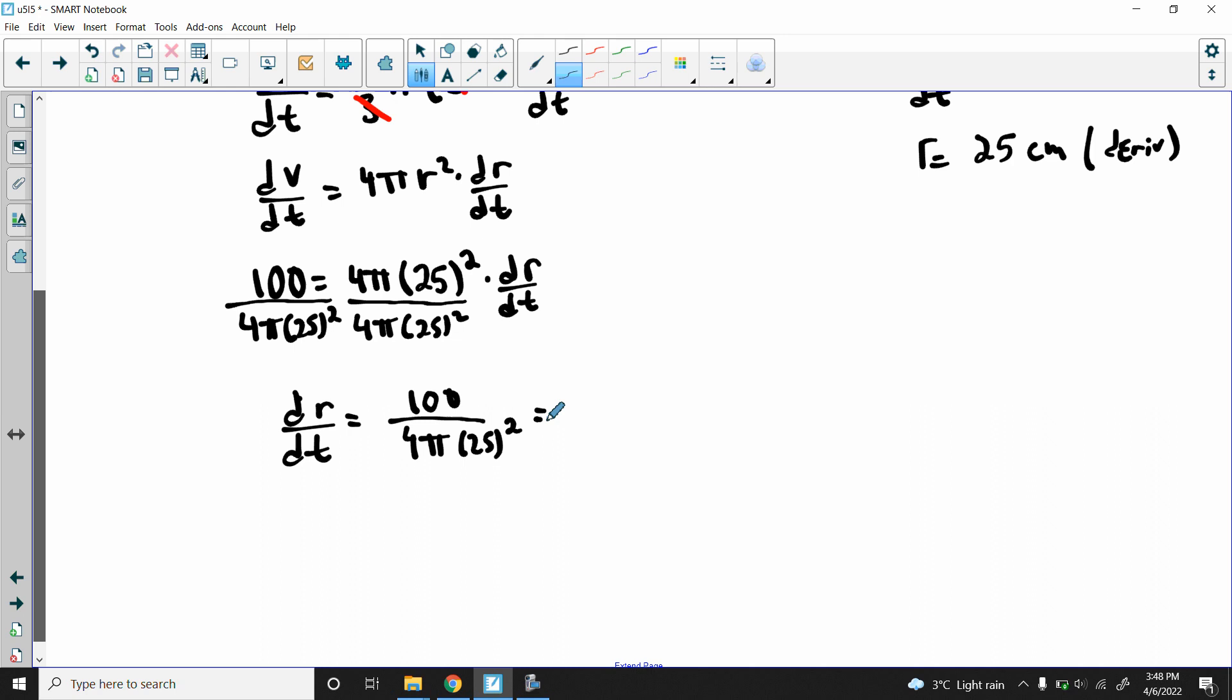So I got this 100 over four pi 25 squared. When we're doing mental math, we want to avoid doing big calculations like 25 squared equals 625. What I like to do is break stuff down so that I can get things to cancel out. For example, I know I have a four here and I know I have 25 times 25, so I could rewrite 100 as 4 times 25.